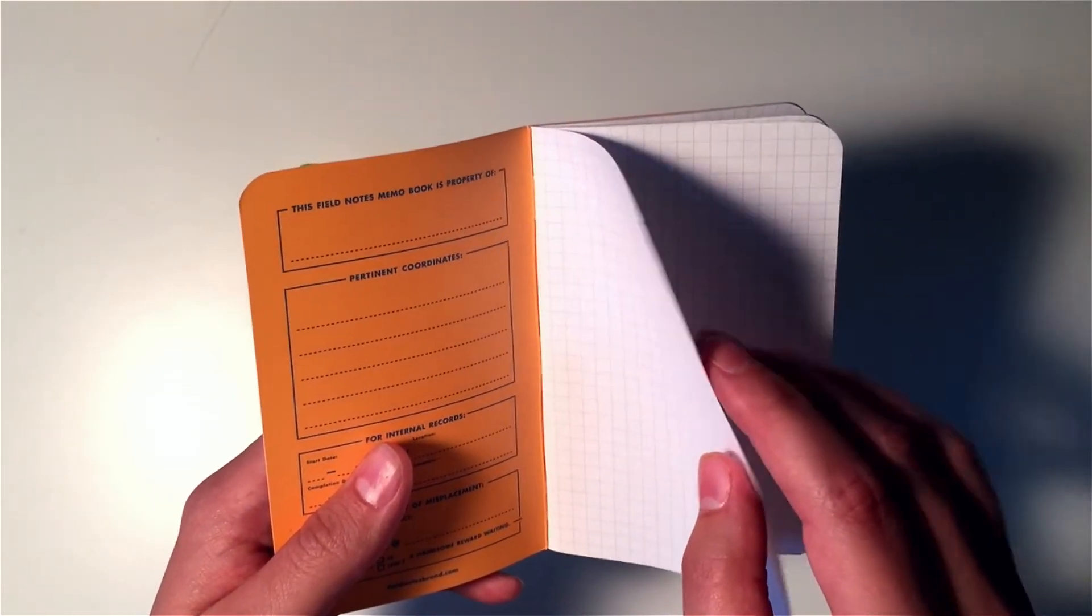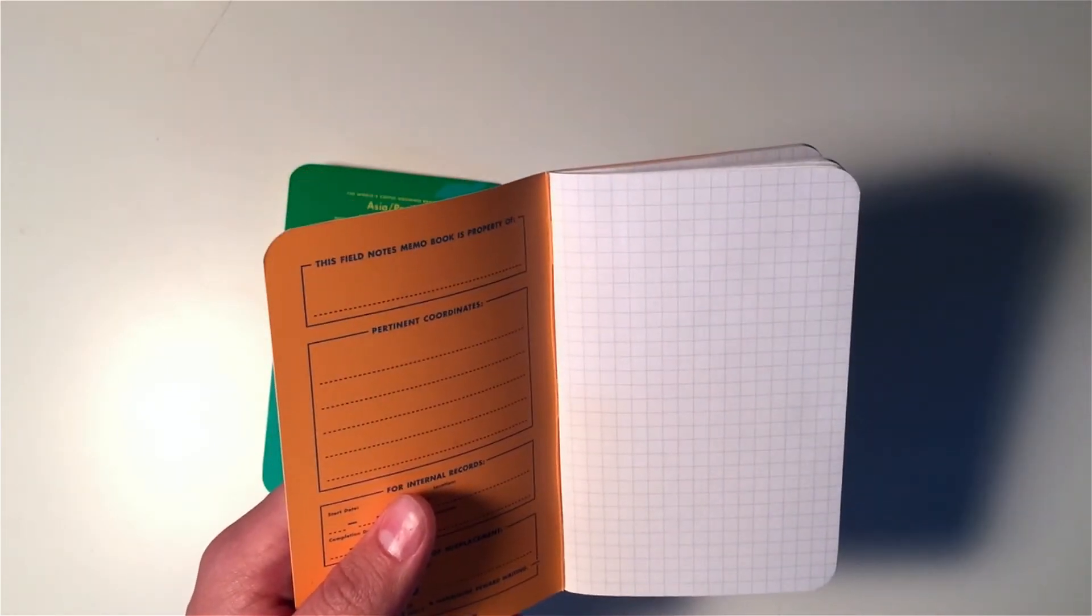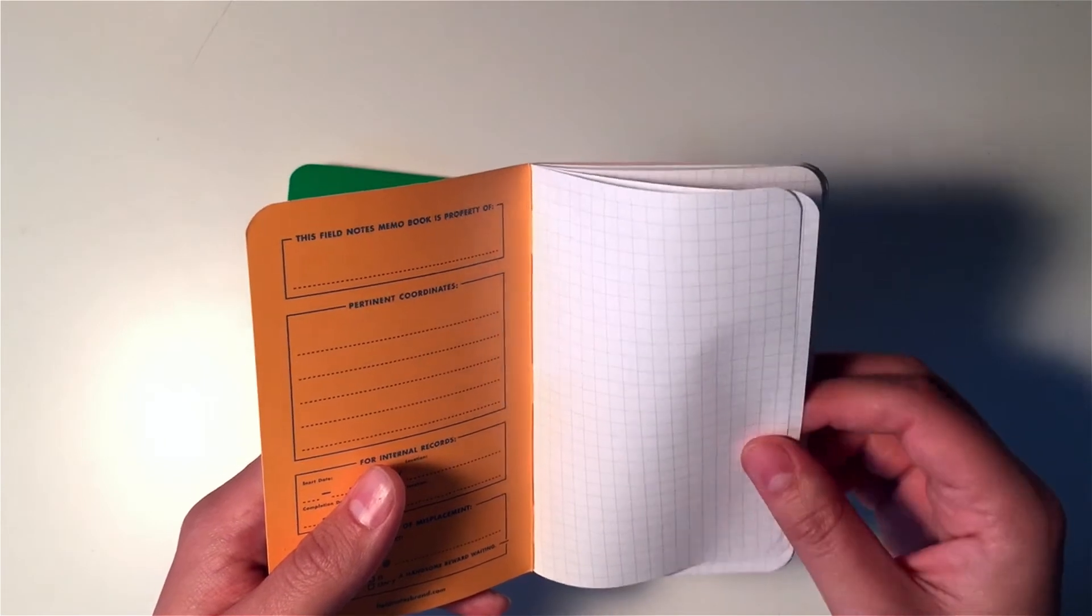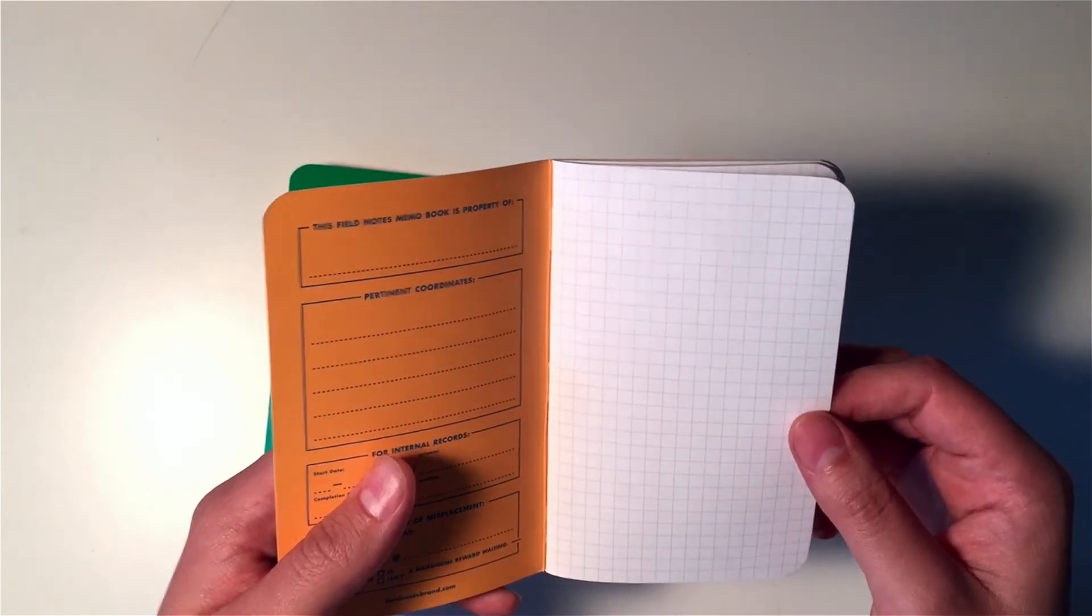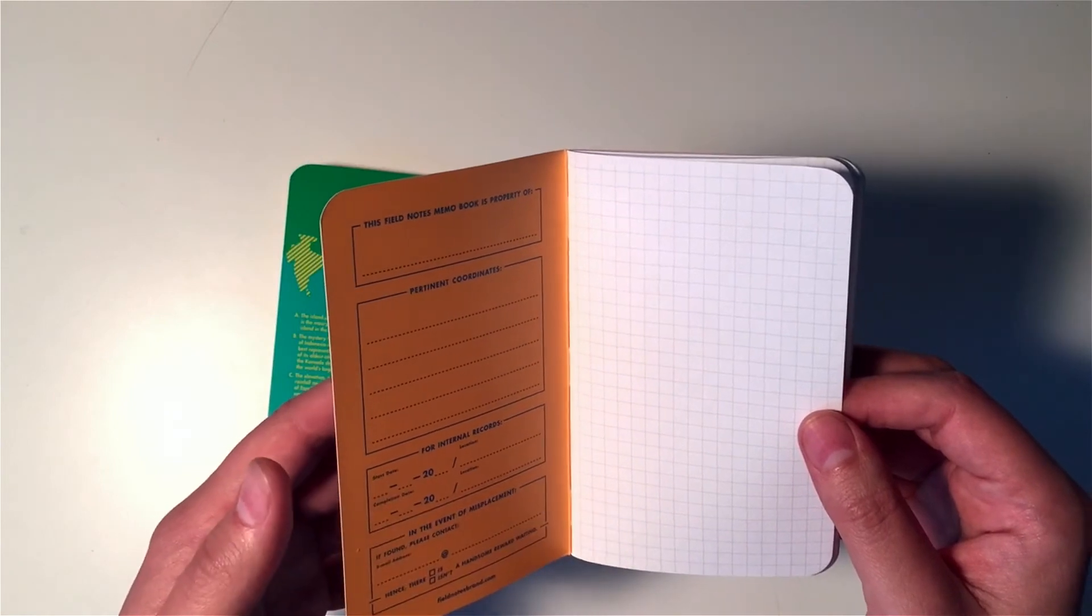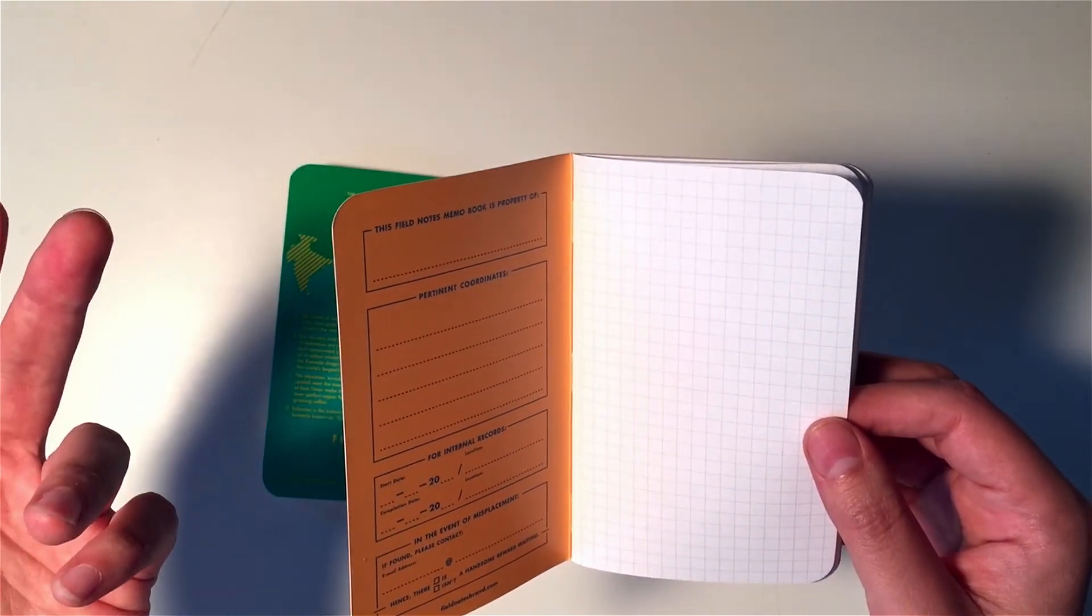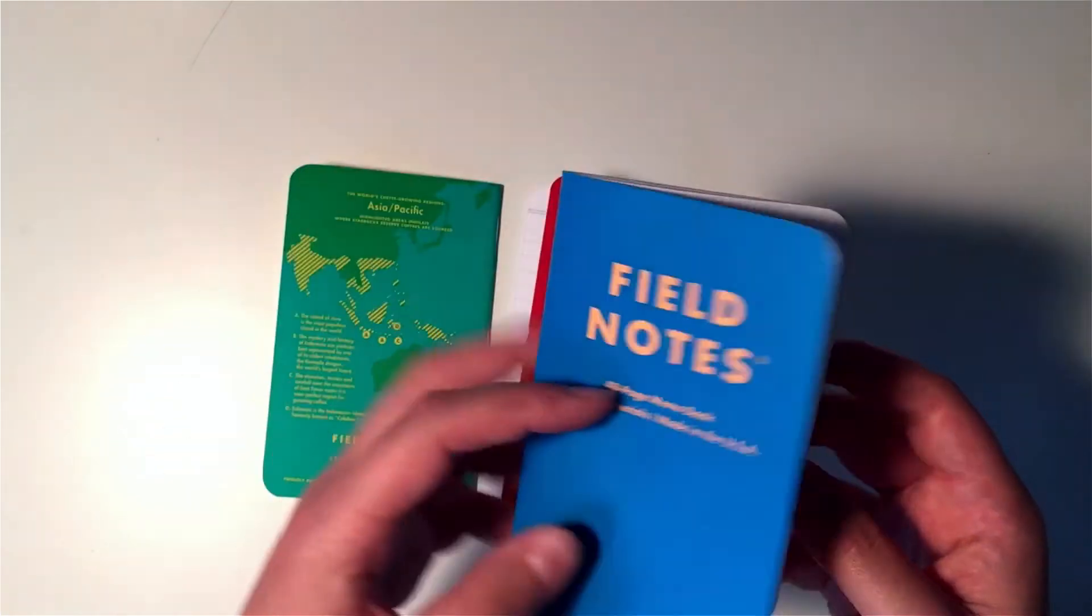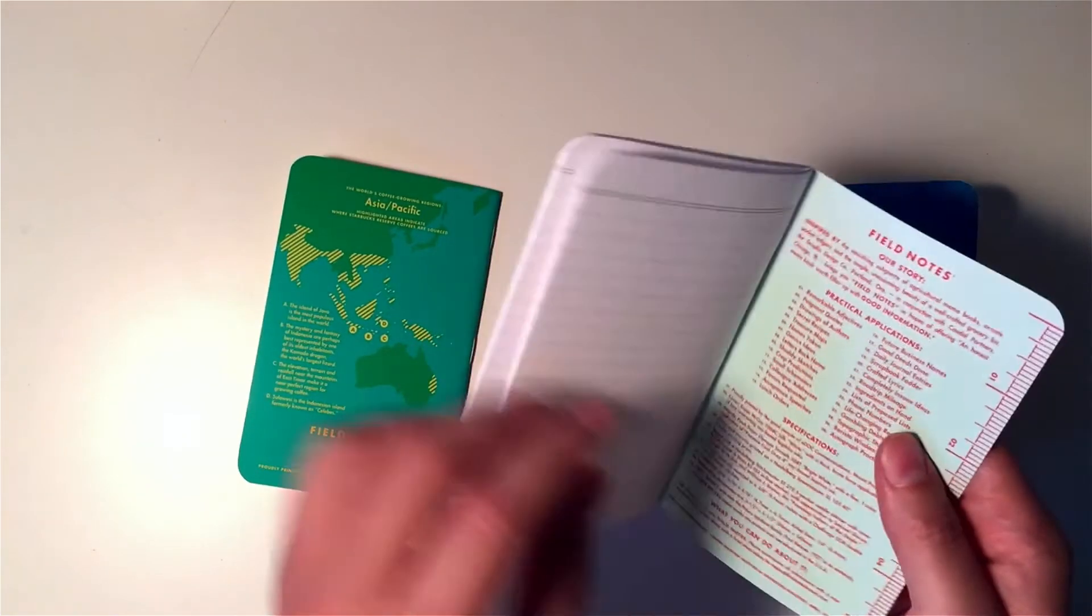The paper itself is pretty thin. It's definitely thinner than the 70 pound paper they use in America The Beautiful and Shelterwood. So let's put this down. Let's pick up this one.